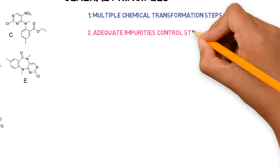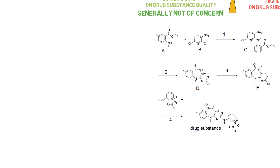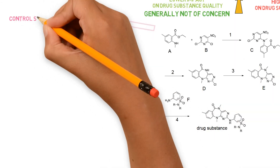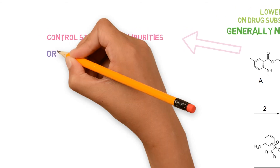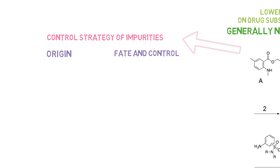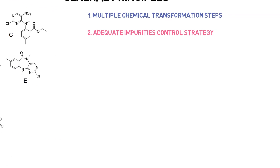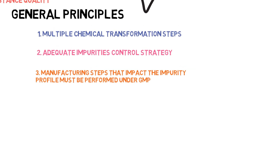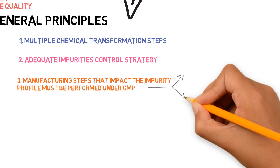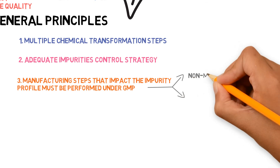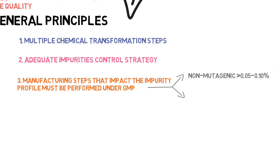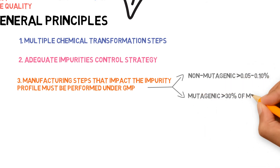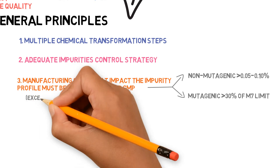The control strategy for impurities must be clear and adequate. Any potential impurity described in the manufacturing process must be addressed in the drug master file impurities section, explaining its origin, fate and control. Manufacturing steps that impact the impurity profile of the drug substance should be included in the process description and performed under GMP. The impurities that impact the impurity profile are: any non-mutagenic impurity present at levels higher than the ICH Q3A identification threshold — 0.05% to 0.10% in the drug substance depending on the maximum daily dose — and any mutagenic impurity present at levels higher than 30% of the ICH M7 limit.